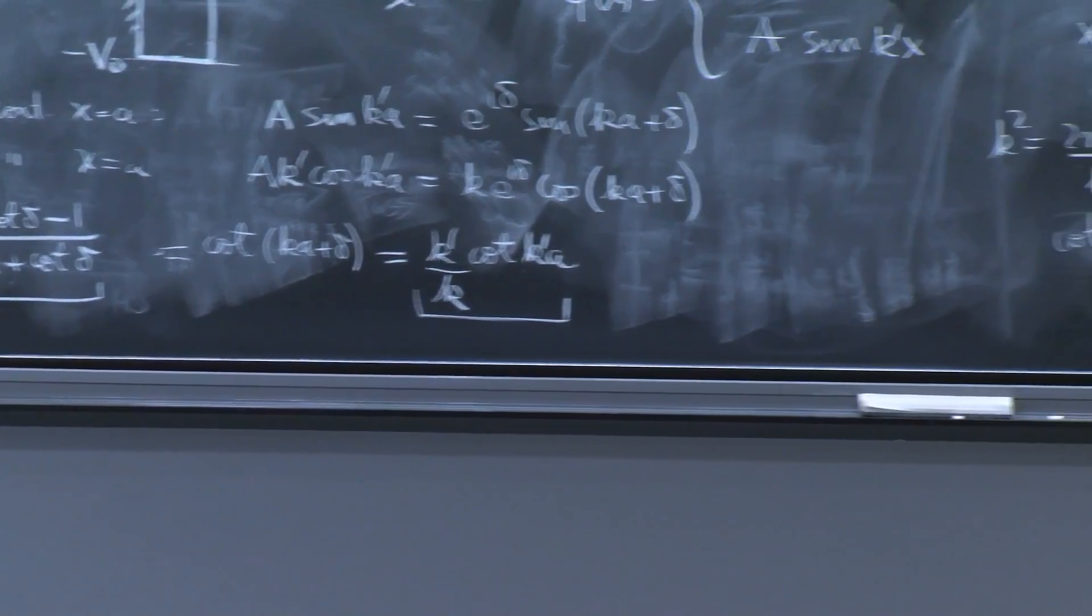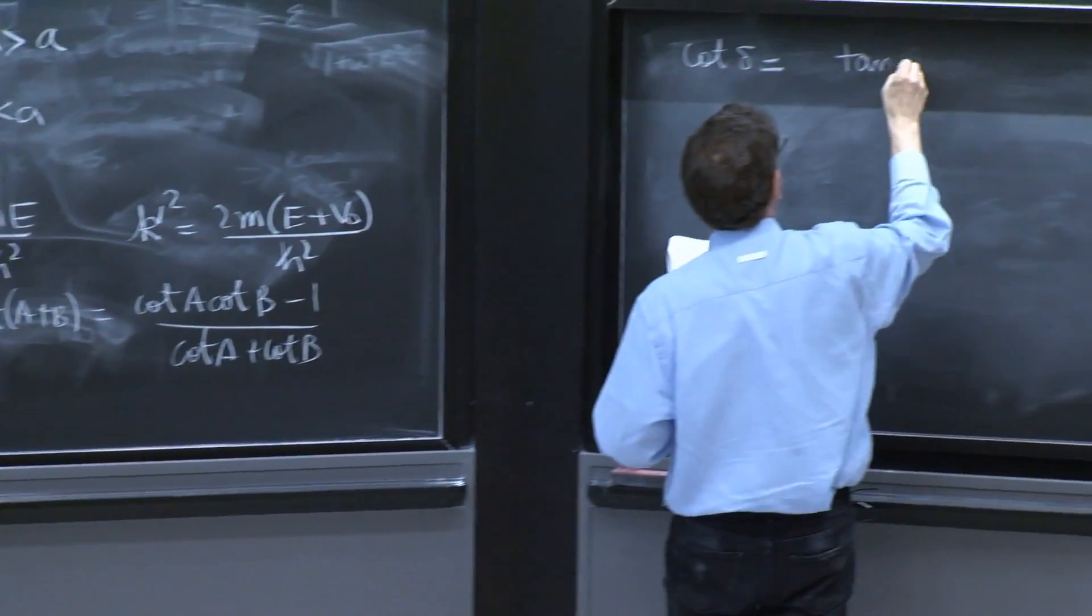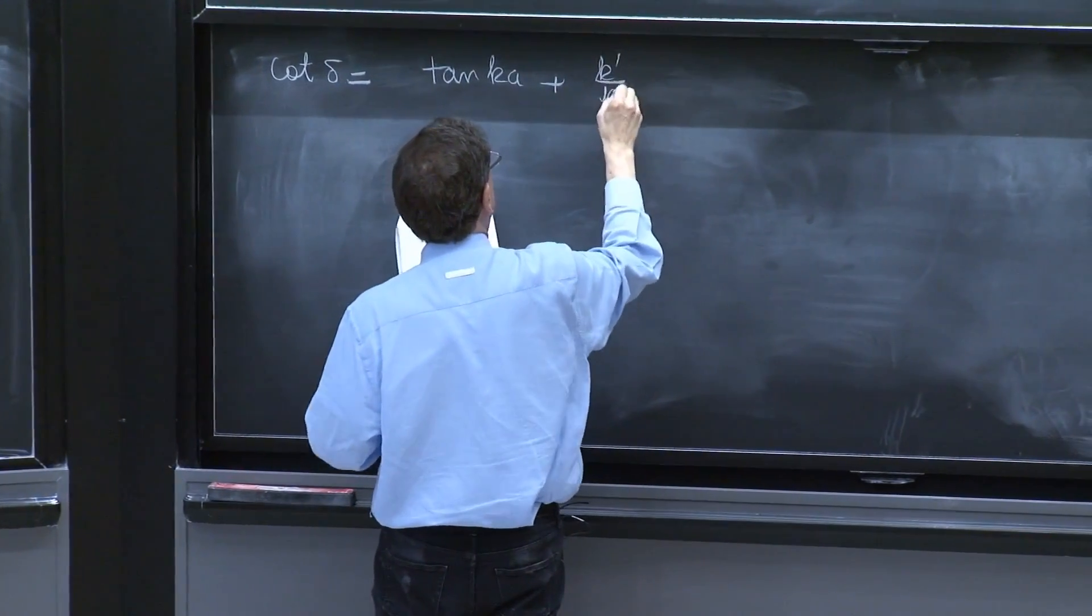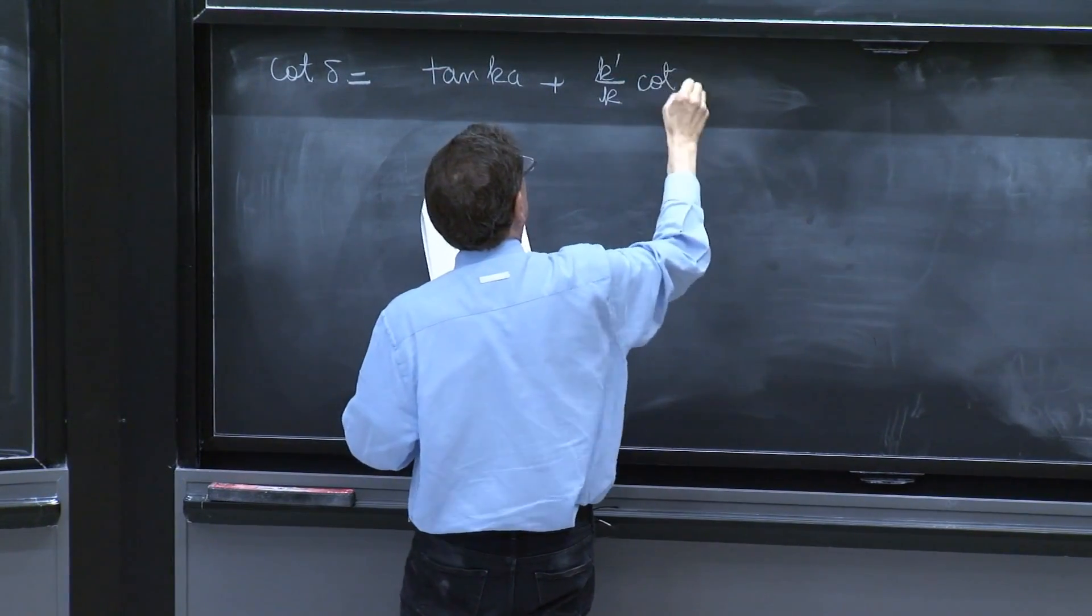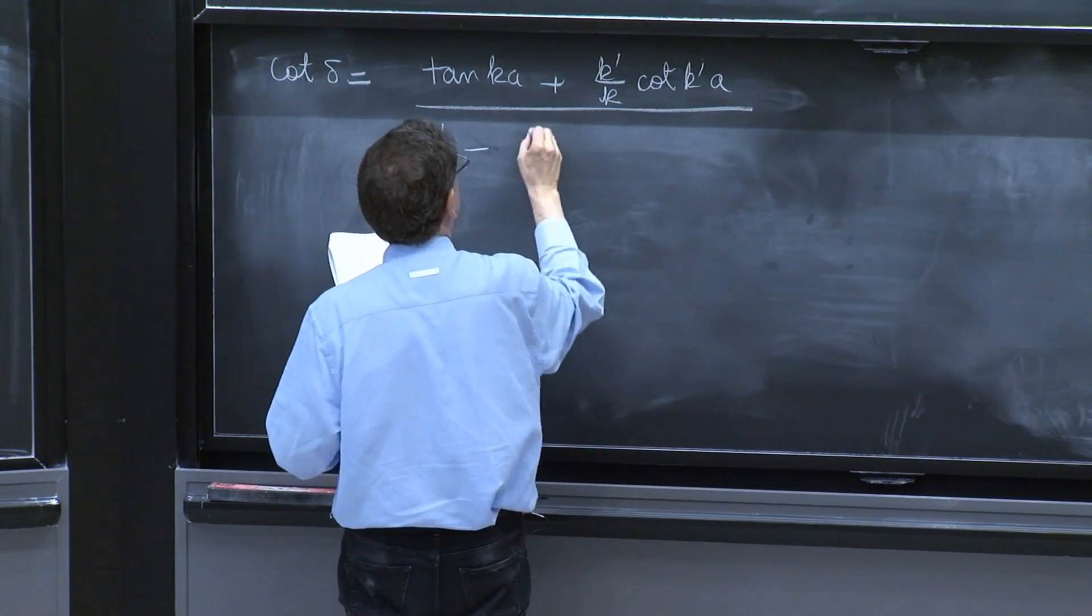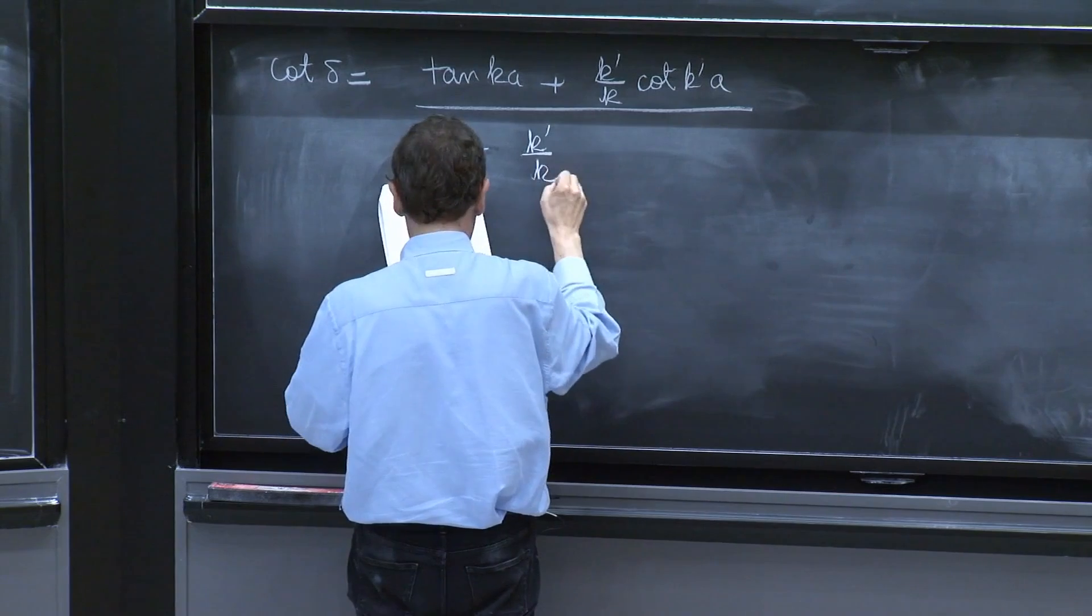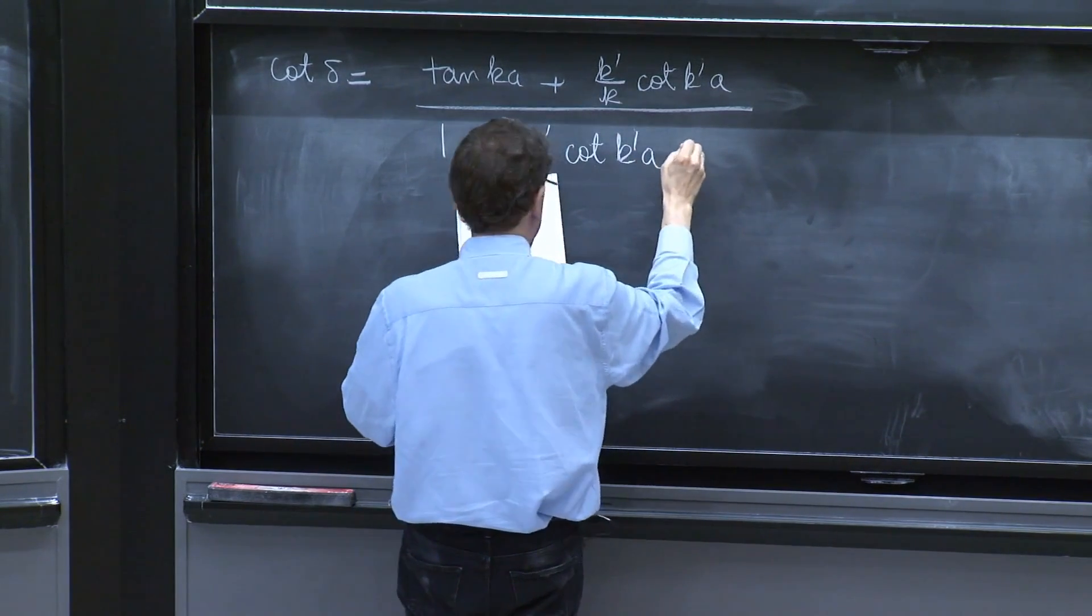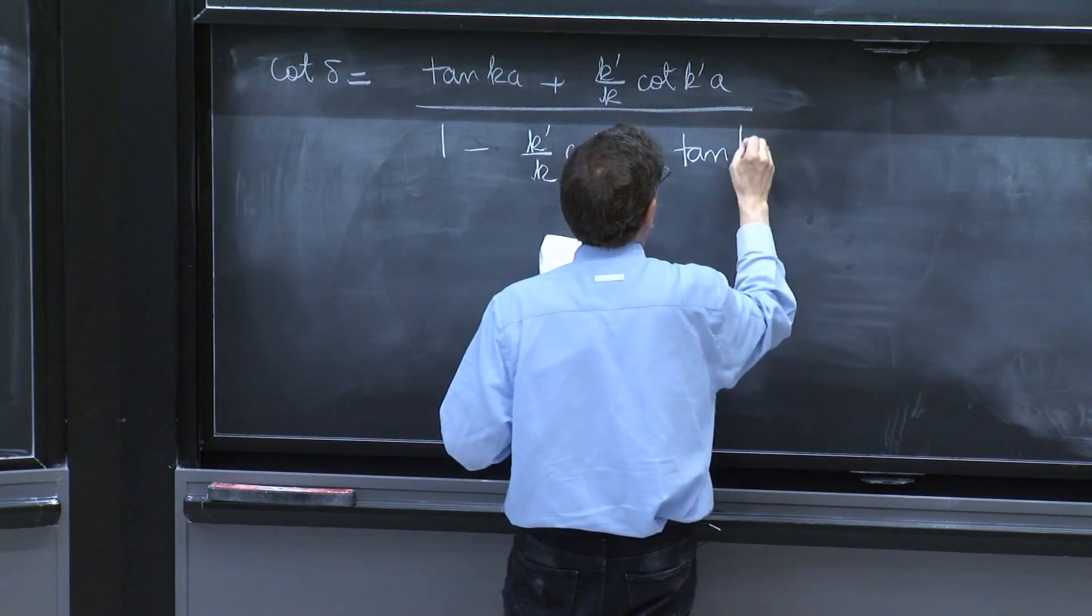cot delta is equal to tan k a plus k prime over k cot k prime a over 1 minus k prime over k cot k prime a tan k a.